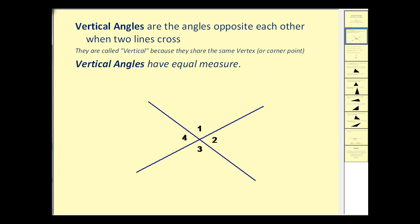Vertical angles are angles opposite each other when two lines cross. They are called vertical angles because they share the same vertex or corner point. And vertical angles have equal measure. So angle one and angle three are vertical angles, and those have equal measure, as well as angle two and angle four.